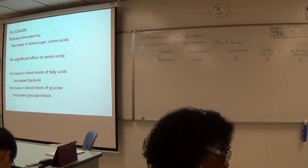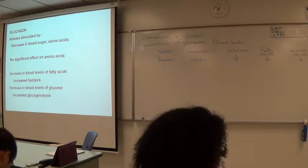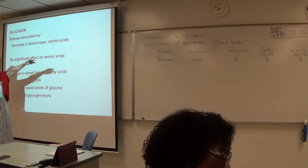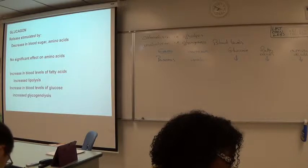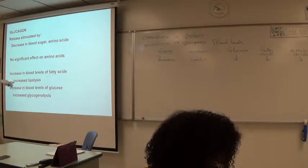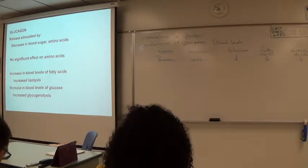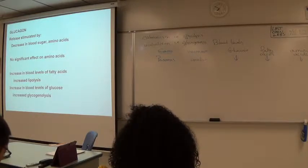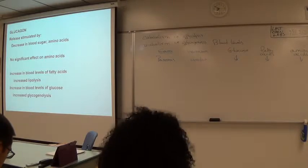Glucagon operates in the post-absorptive state. The absorptive state is within the first two hours of eating; after that, you're in the post-absorptive state. As glucose levels drop — partly from use and partly due to insulin effects — if you don't eat again, we see a breakdown of lipids and a breakdown of glycogen to raise blood levels. The interaction between these two hormones prevents sharp peaks and deep drops in blood sugar — homeostasis.